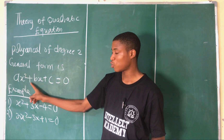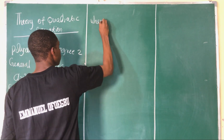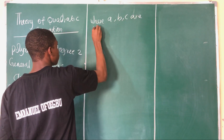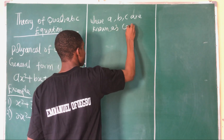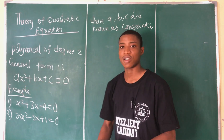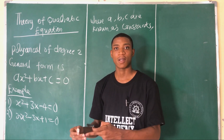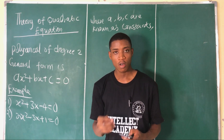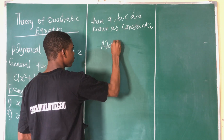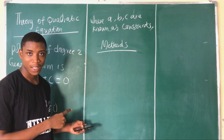In the general form ax² + bx + c = 0, a, b, and c are known as constants in the quadratic equation. Now we will talk about the methods of solving a quadratic equation, because there are different types of methods available.